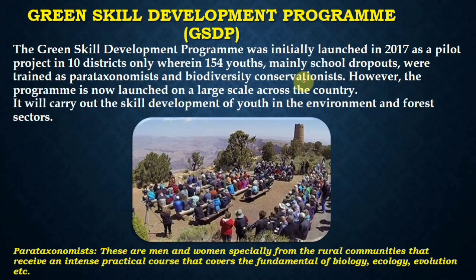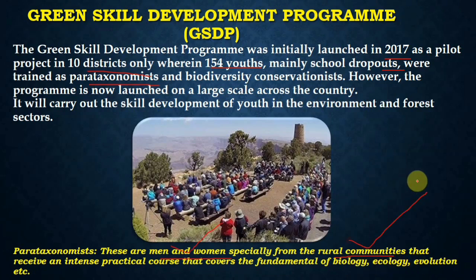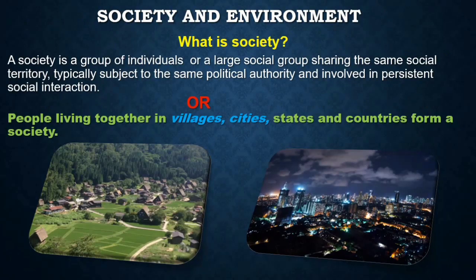A program launched by the Government of India is the Green Skill Development Program (GSDP). It was initially launched in 2017 as a pilot project in 10 districts, where 154 youths — mainly school dropouts — were trained as para-taxonomists and biodiversity conservationists. Para-taxonomists are men and women, especially from rural communities, who receive an intensive practical course covering the fundamentals of biology, ecology, evolution, and more, so they can protect our environment.